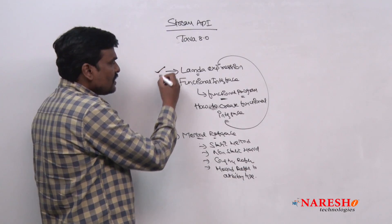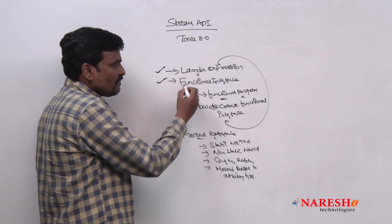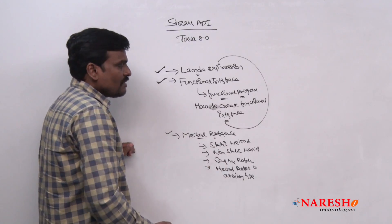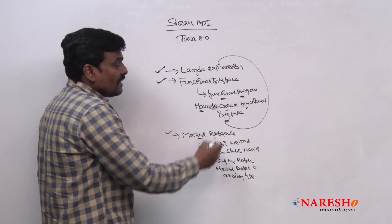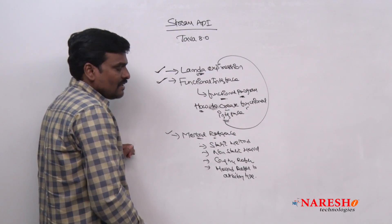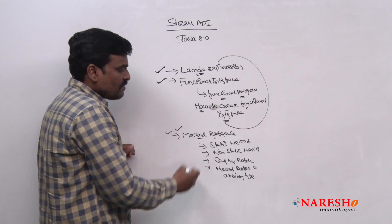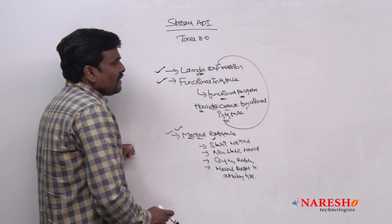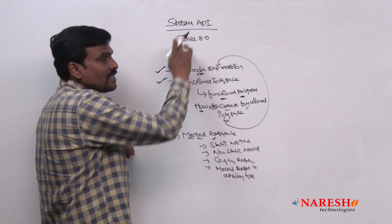Till now, we have covered all these features in Java 8 — lambda expressions and functional interfaces, which are an approach towards functional programming — and shorthand ways of representing lambda expressions using method reference. Now, we will try to use all of this when we work with the Stream API.